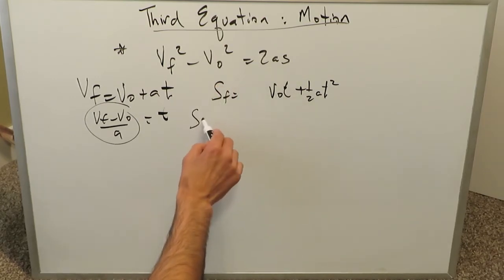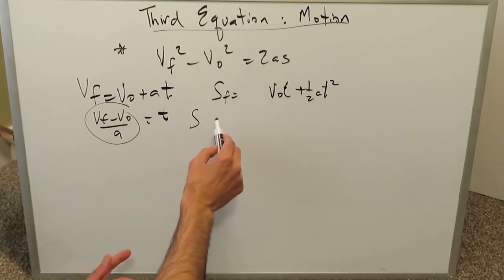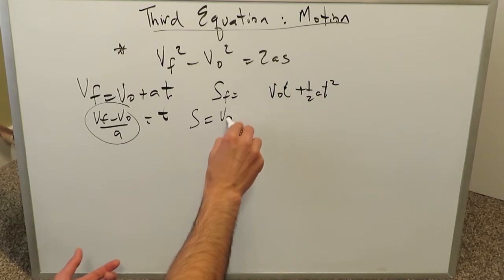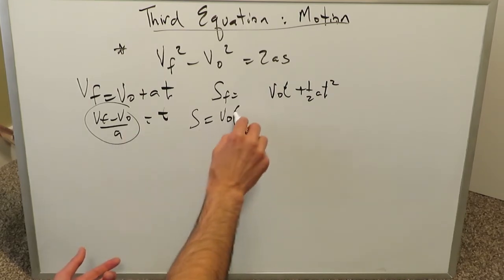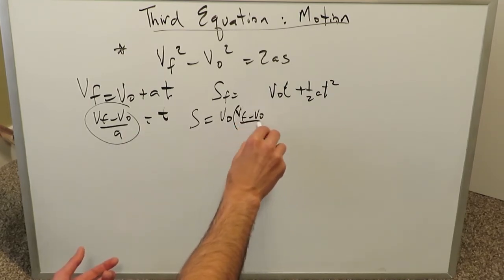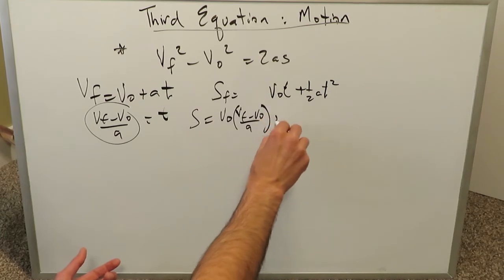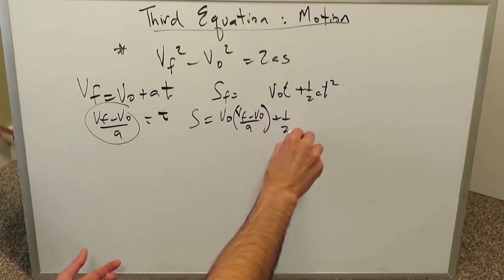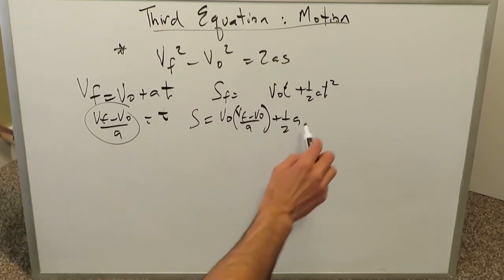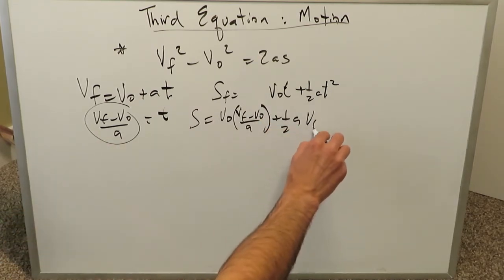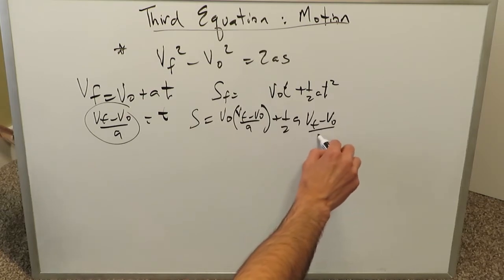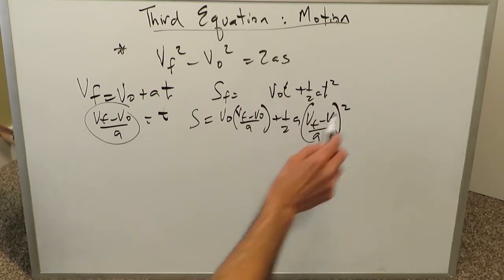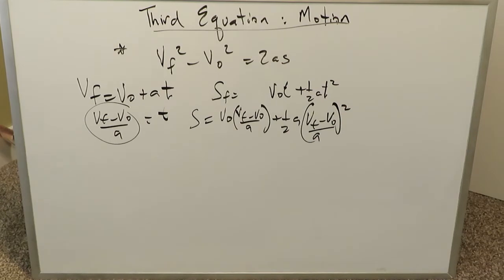Considering position as s, you have: s equals vo times t plus half a times t squared, where t is replaced by (vf minus vo)/a. So: s equals vo times (vf minus vo)/a plus half a times (vf minus vo)/a, all squared. Now it's just algebra all the way through.